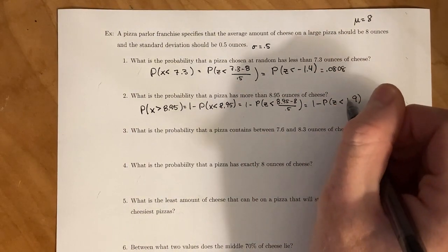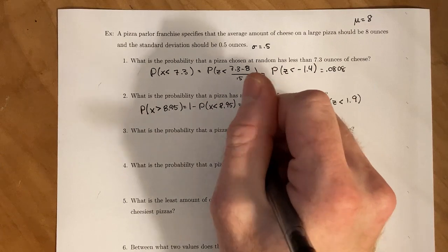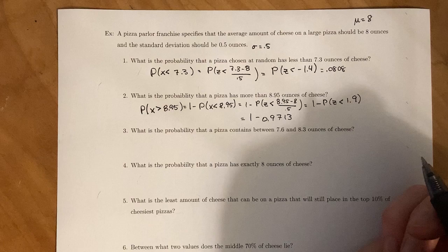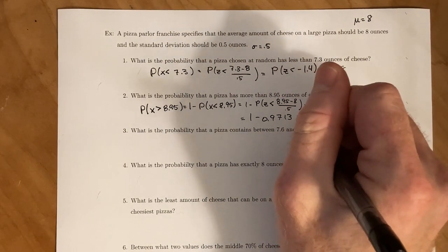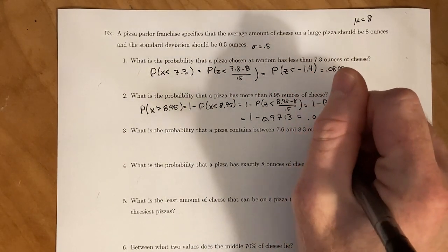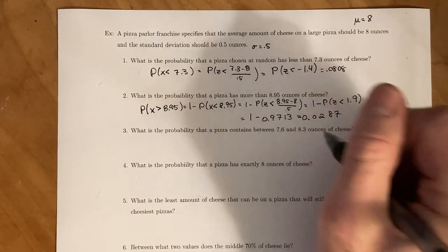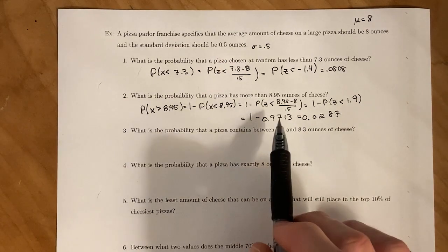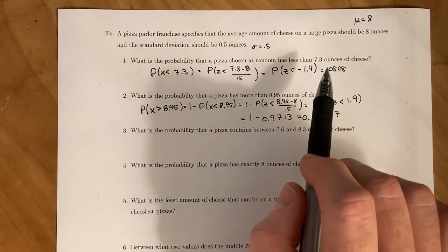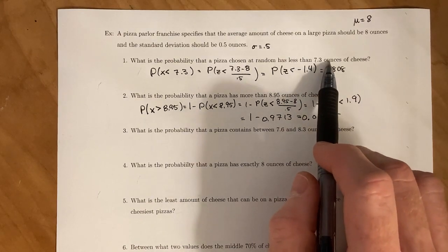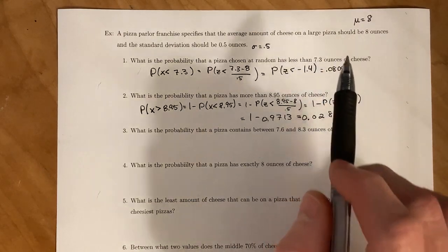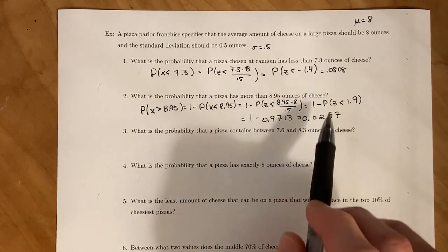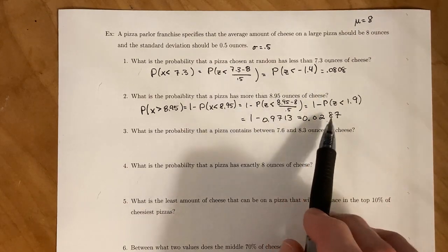If you go to your chart for 1.9, you see that it's going to be 0.9713. And 1 minus that gives us 0.0287. So you have a higher probability of having a pizza with less than 7.3 ounces of cheese than to get a pizza that has more than 8.95 ounces of cheese.